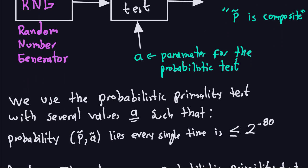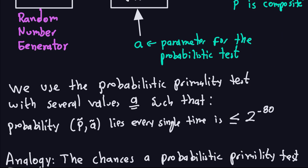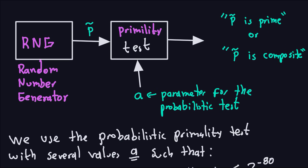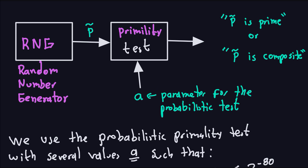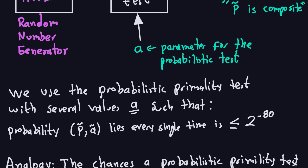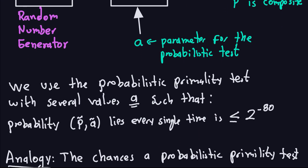We run the probabilistic primality test with several different values of 'a'. The test uses the pair (p, a): p is the number we want to check and a is the parameter. The probability that the test lies — meaning it says prime when the number is actually composite — is less than 2^(−80).